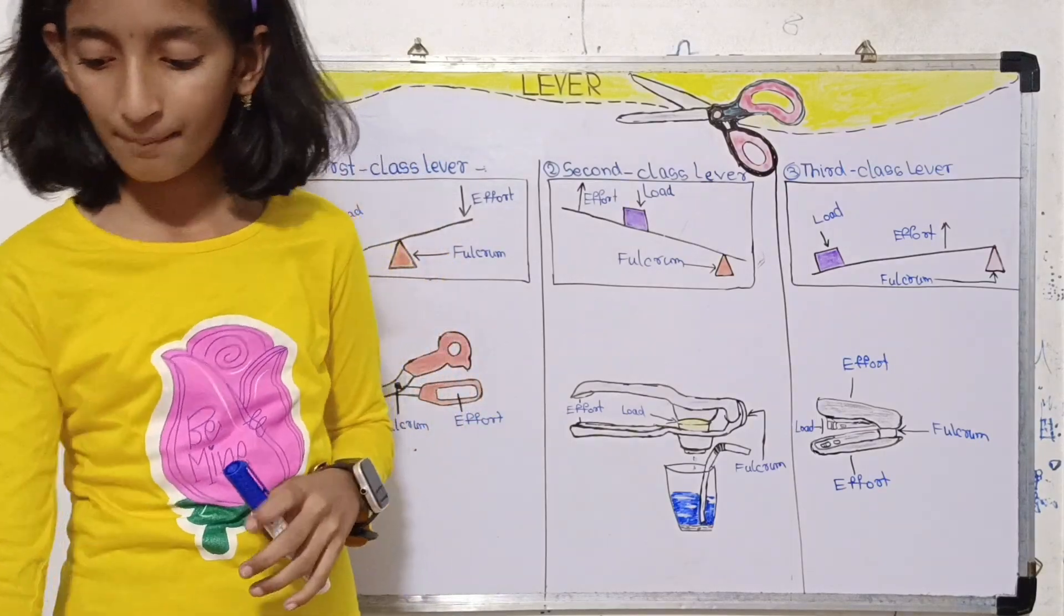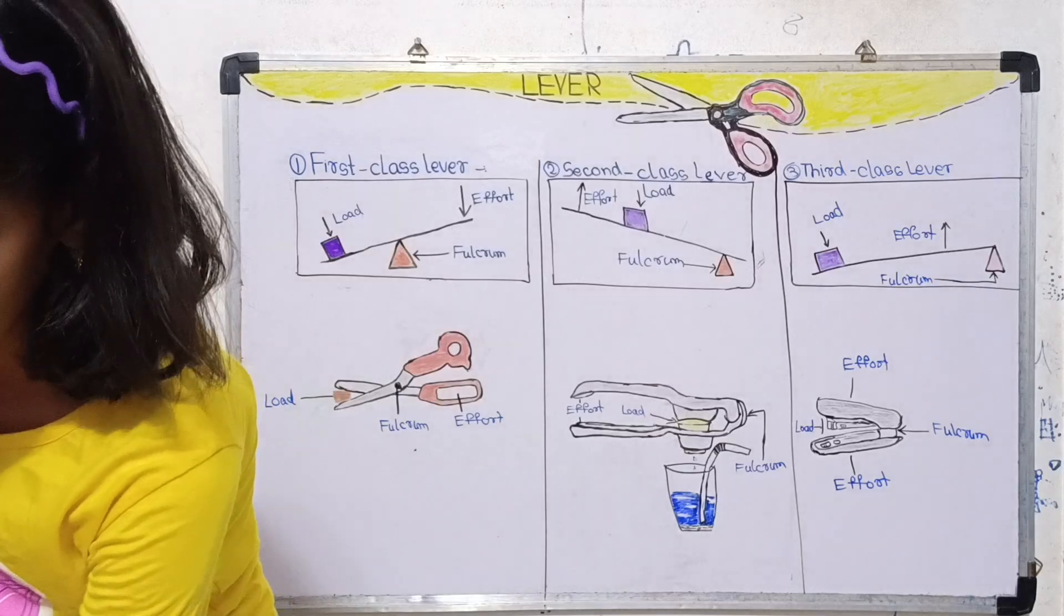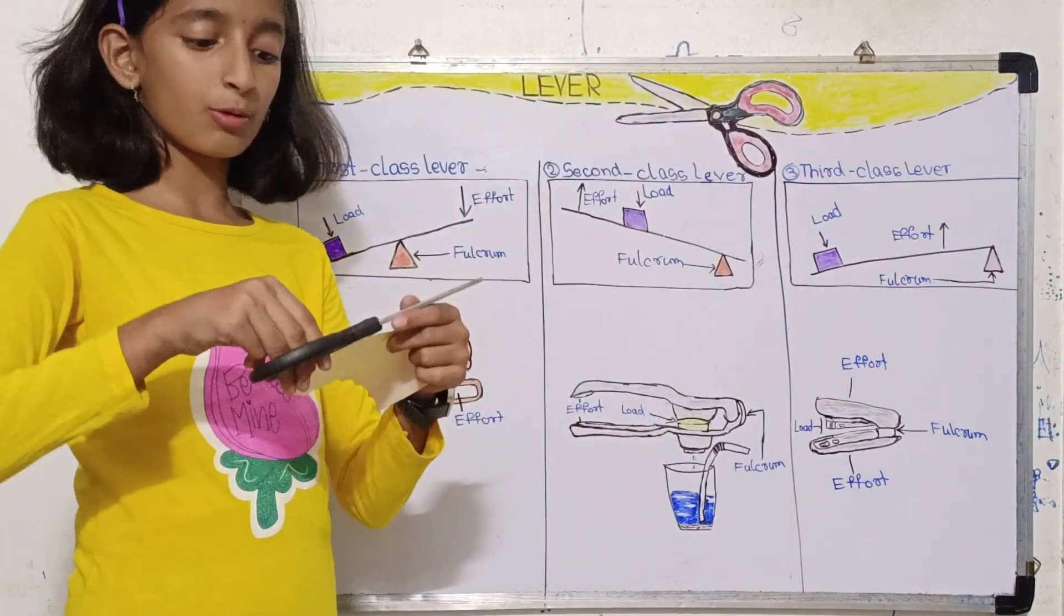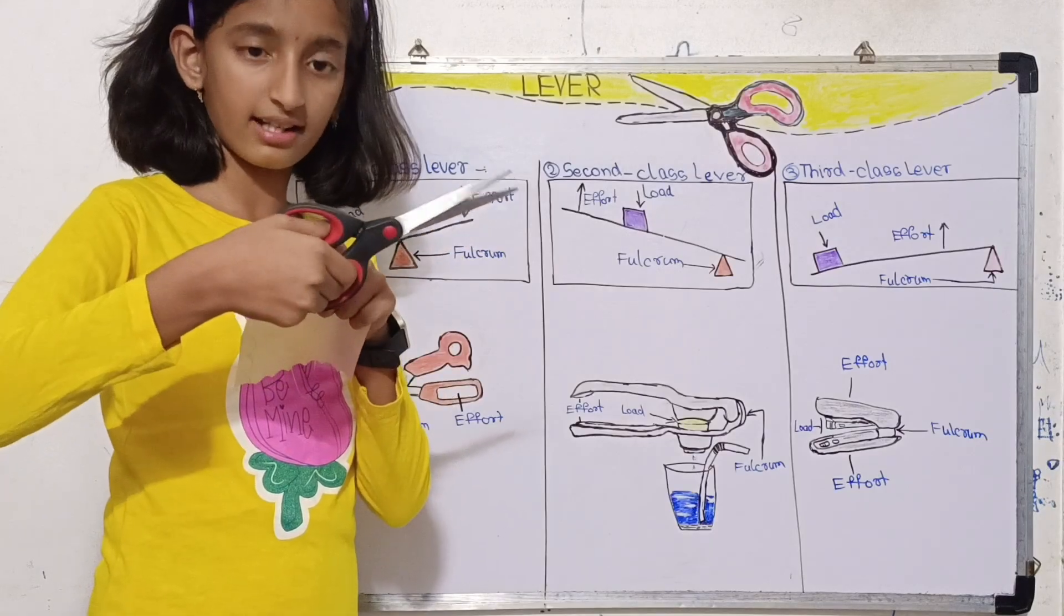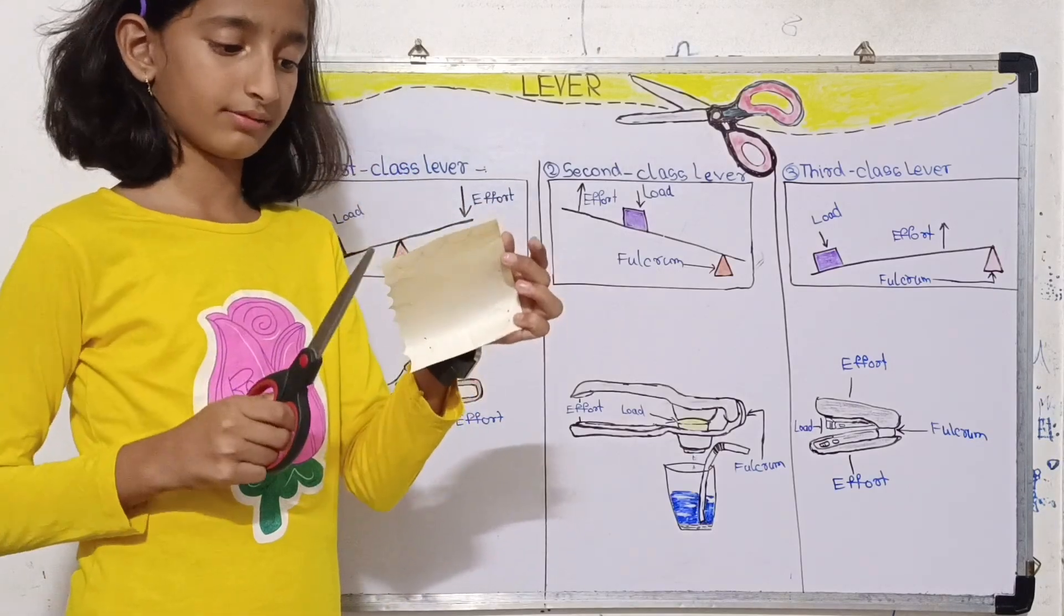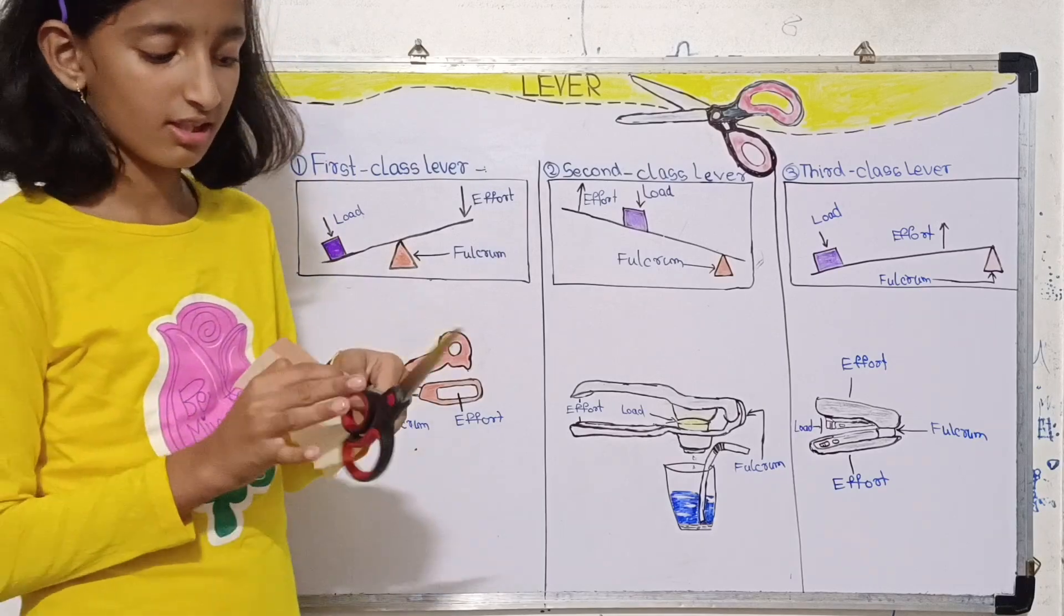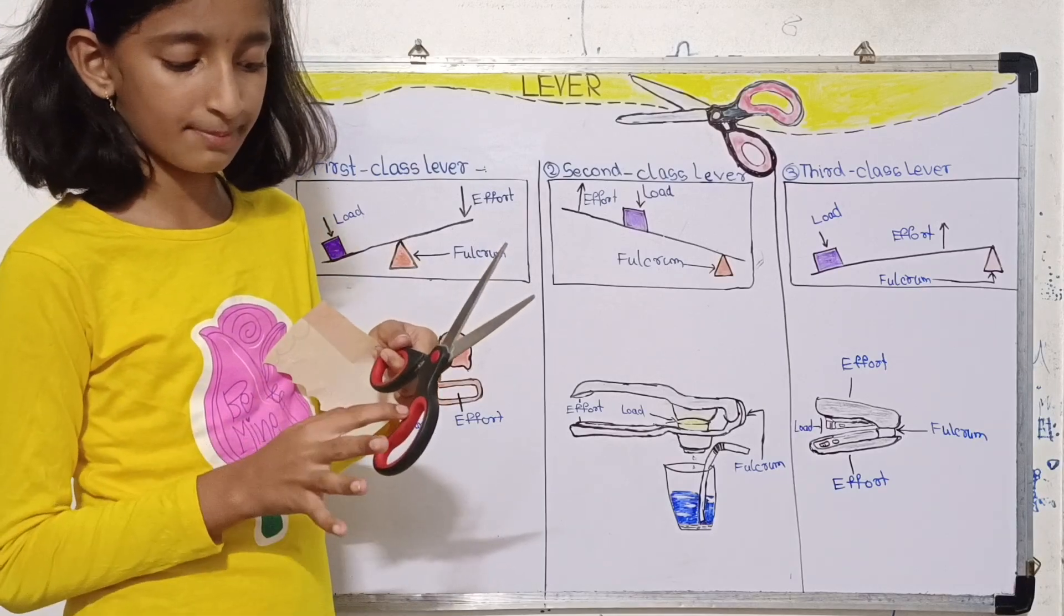So here you can see the effort - we put our effort here to cut the paper. And here is the fulcrum in between which keeps these parts joined in the middle and allows the other parts to move.